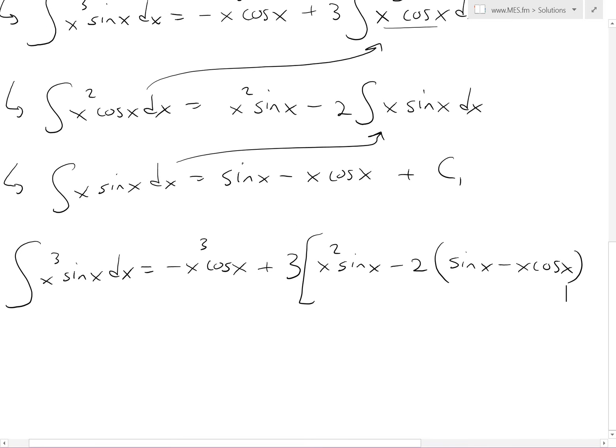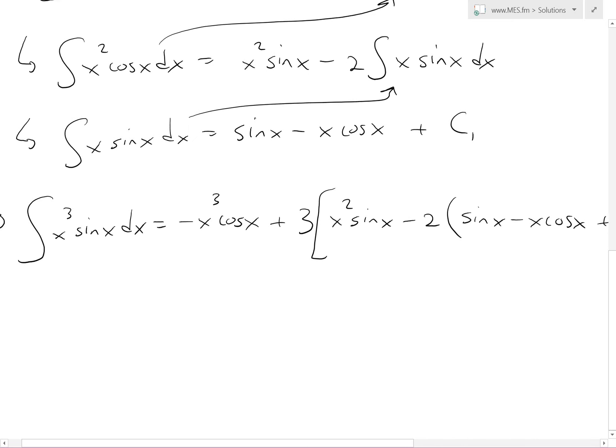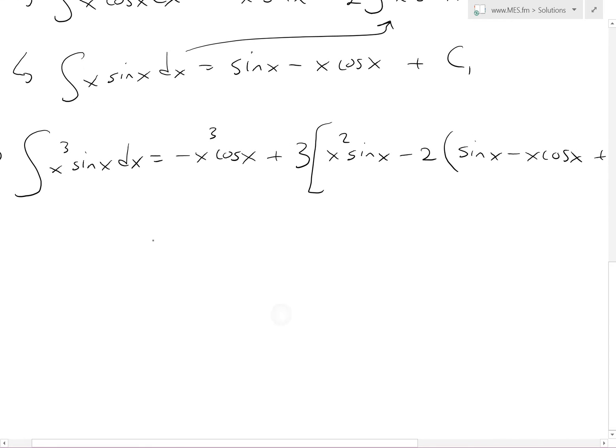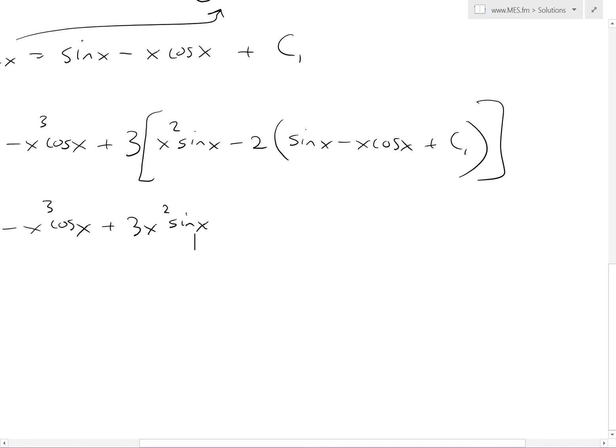And we shall take this bracket out plus C₁ right here. So what we'll get is, multiply this all out, we get equals to negative x³ cos(x), and then we plus right here 3x² sin(x), and then we have to minus—well it's going to be a 6.